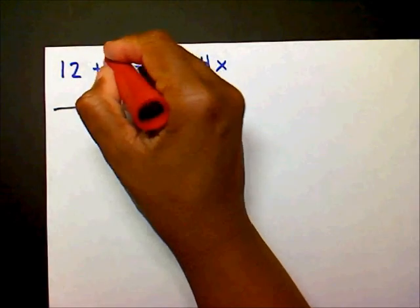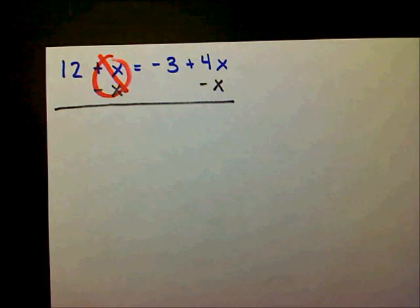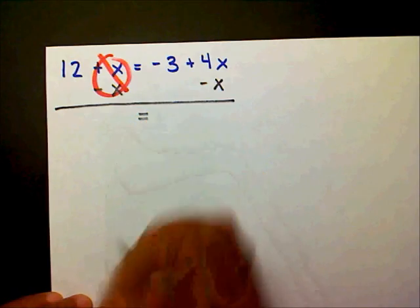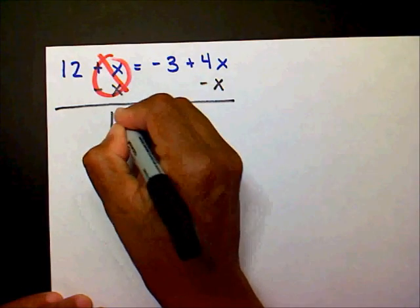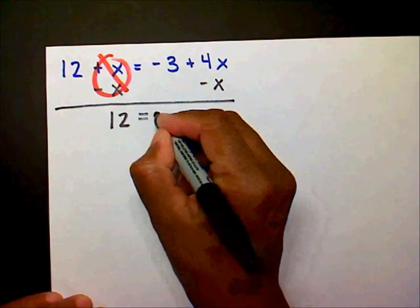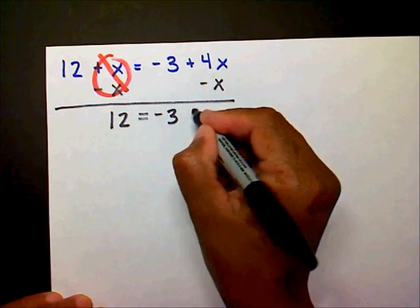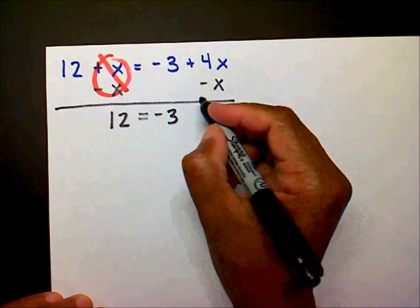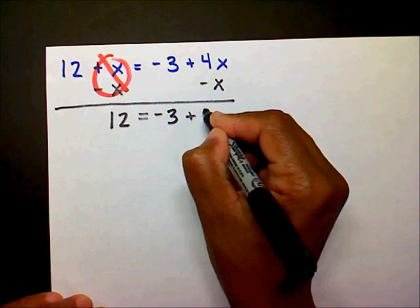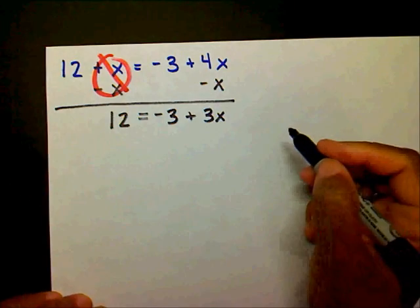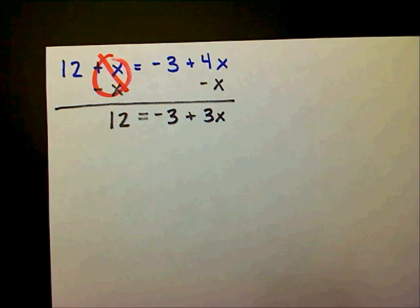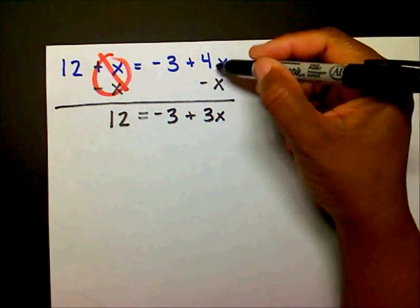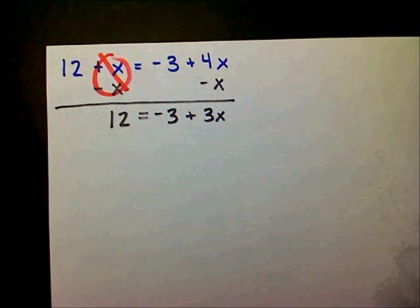This is going to create a zero pair. On the left-hand side I'm left with 12, and on the right, 4x minus x is 3x, so I have 12 equals 3x minus 3. If you're having difficulties with this, please watch my video on combining like terms.